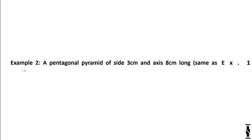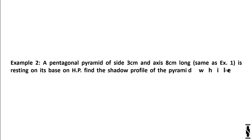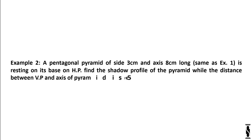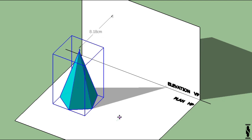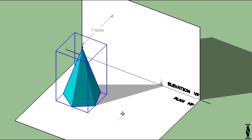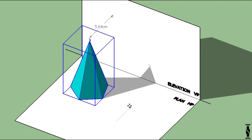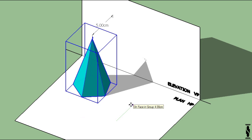Example 2. A pentagonal pyramid of side 3 cm and axis 8 cm long is resting on its base on HP. Find the shadow profile of the pyramid while the distance between VP and axis of the pyramid is 5 cm. Again, take a look into the 3D representation and shift the pyramid towards VP so that the distance between axis of pyramid and VP will be 5 cm.